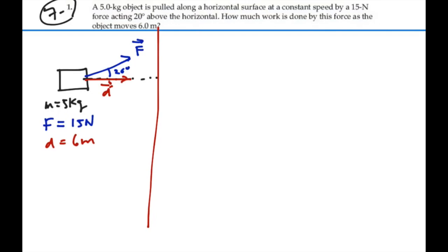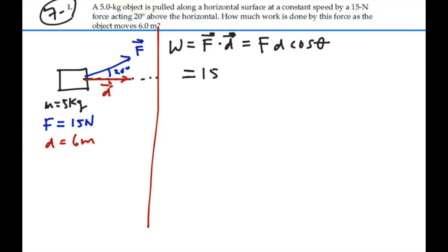We know by definition that the work is equal to the dot product between the vector force and the displacement. As a dot product, that means it's the magnitude of the force times the magnitude of the displacement times the cosine of the angle between their two directions. In this case, that's going to be 15 newtons times 6 meters times the cosine. The angle in this case between the two of them is that 20 degree angle.